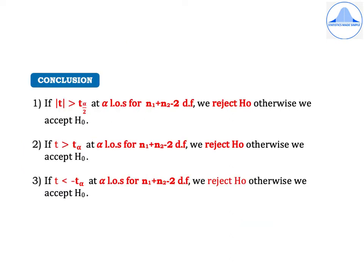Conclusion: if |T| > T(α/2) at the α level of significance for N1 + N2 − 2 degrees of freedom, we reject H0; otherwise we accept H0.